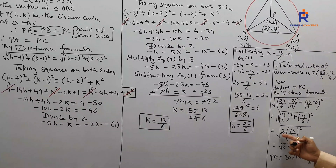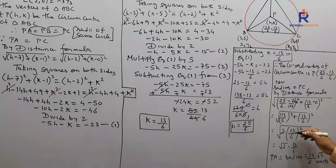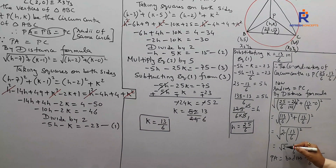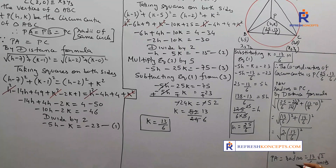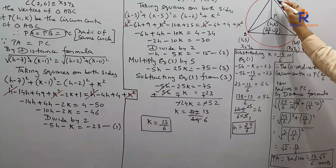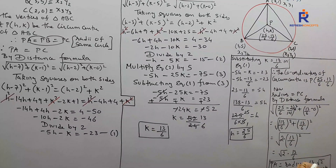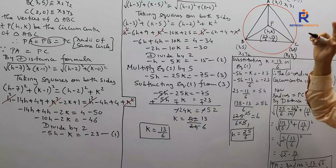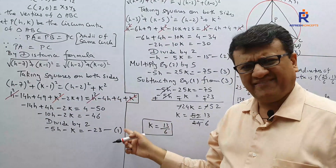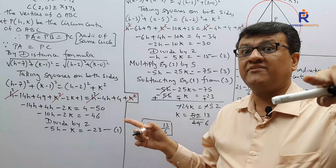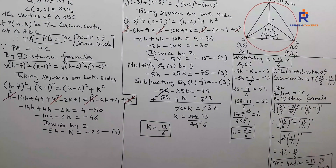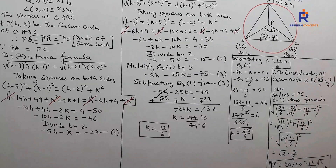The circumradius is 13√2/6 units. I hope you understood — a² + a² = 2a², and taking the square root gives √2 · a = √2 · 13/6. So we have found both the circumcenter P(25/6, 13/6) and the circumradius 13√2/6 units. You could have used PA or PB as well — the choice is yours. I took PC because its expression was already available. This is one of the best problems you can have from coordinate geometry.